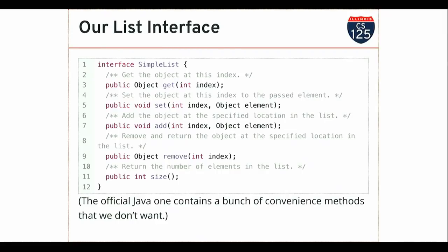Get should get the object stored at this index. I can write a dummy list class that implements these and just does random things, and it will compile and run — but anyone using your code will be very frustrated. Set is supposed to alter the element at that index; add and remove have documentation describing what they're going to do. You guys finished implementing this for an array list last week. For an array list, get and set were extremely simple — just pass-throughs using bracket notation. Add and remove turned out to be more work because you had to modify the size of the underlying array.